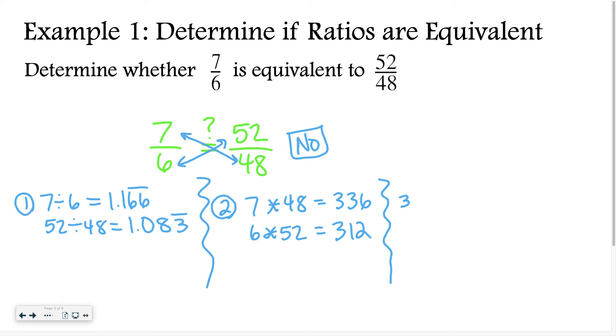Another way to solve it, because I'm all about showing you multiple ways to solve things, is to simplify fractions. So 7 over 6, that can't really reduce any further unless you were to make it a mixed number. And we don't want to do that. But 52 over 48, I know that can reduce. 52 divided by 2 would be 26, 48 divided by 2 would be 24. Again, if you divide by 2, 13 over 12. So, again, as you can see, these two fractions are not equivalent. So the answer would be no.